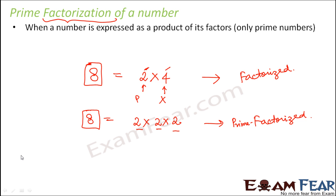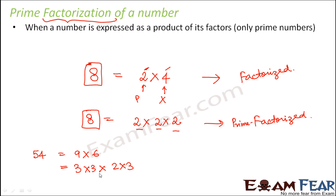Let us take some other examples. Let us talk about the number 54. So 54 can be written as 9 into 6. This is factorization of 54, but it is not prime factorization because neither 6 nor 9 is a prime number. But if we write 9 as 3 into 3 and 6 as 2 into 3, then 54 can be written as 3 into 3 into 2 into 3. So 3 and 2 are factors of 54 and all are prime numbers — therefore this is prime factorization of 54.